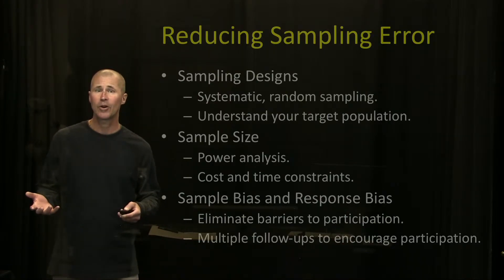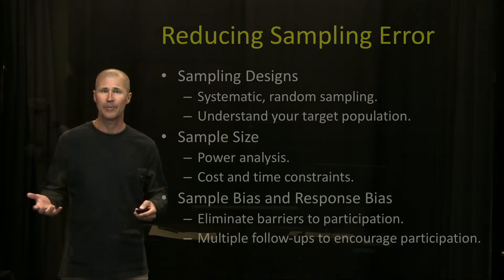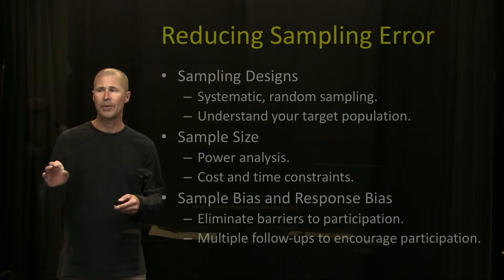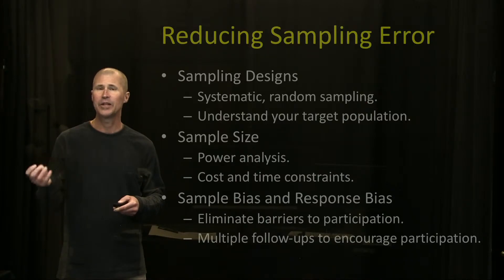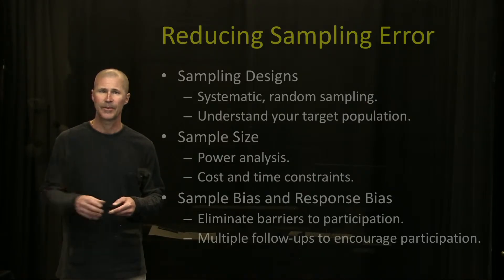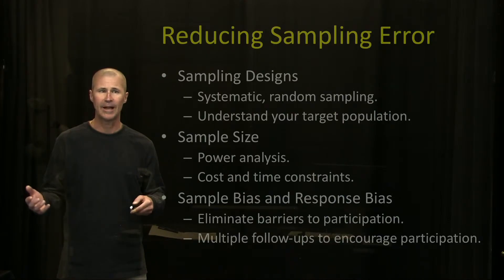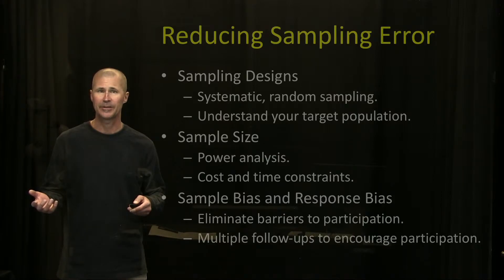Of course, we have to take into account cost and time constraints. Oftentimes we can do a power analysis, which will determine the minimum sample size you need to run certain tests. And finally, what we want to do is reduce sample bias and response bias — and oftentimes we can do this through multiple follow-ups and by eliminating some of the barriers to participation.